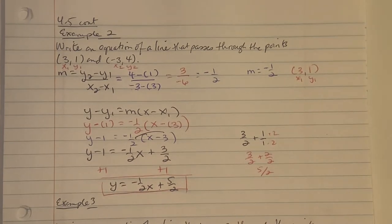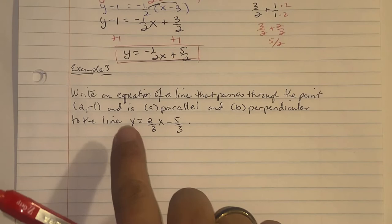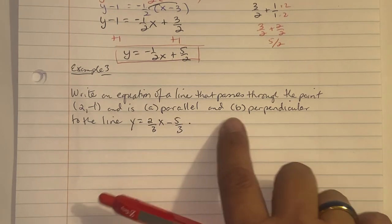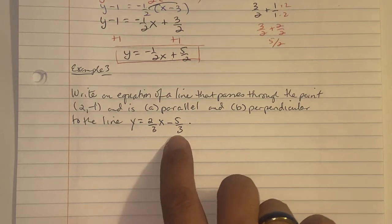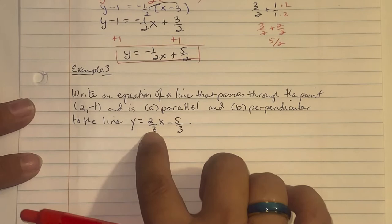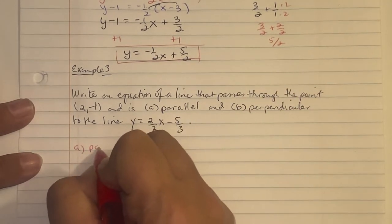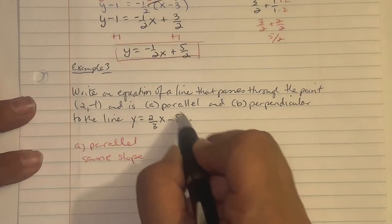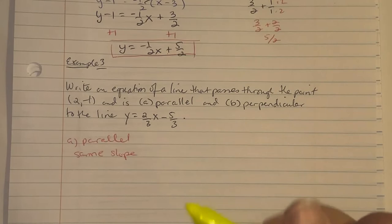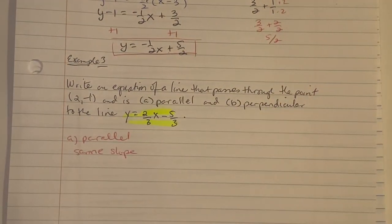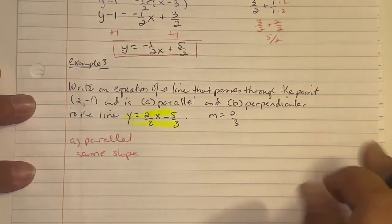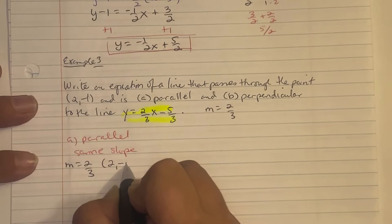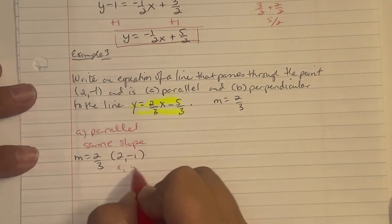Example 3: Write an equation of a line that passes through (2, -1) and is (a) parallel and (b) perpendicular to the line y equals (2/3)x minus 5/3. For parallel lines, remember they have the same slope. The slope from the given equation is 2/3, so we use m equals 2/3 and ordered point (2, -1) as (x₁, y₁).